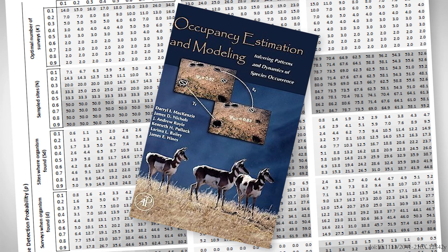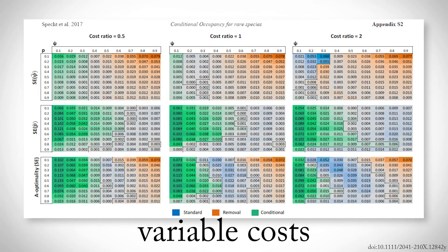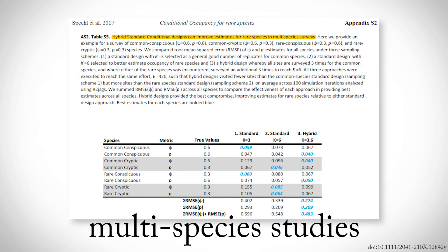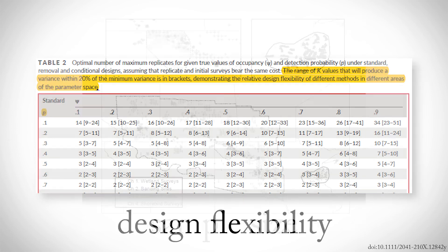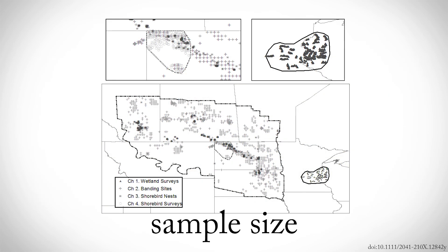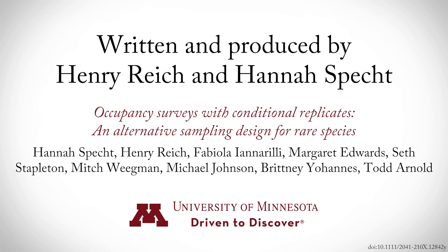Designing an occupancy study is, of course, much more complicated than the simple examples we've used. The probabilities that an individual is present, or that you'll detect it, probably won't be constant across all sites. The cost of initial and replicate visits may not be equal. You may be conducting a multi-species study with a mix of rare and common species. You may not actually know whether your study species is rare or common. And you should definitely be working with more than 24 total visits to sites. We address all these issues and provide recommendations for implementing and analyzing conditional design studies in our paper, which is linked at the top of the video description. Good luck counting animals! And thanks for watching!